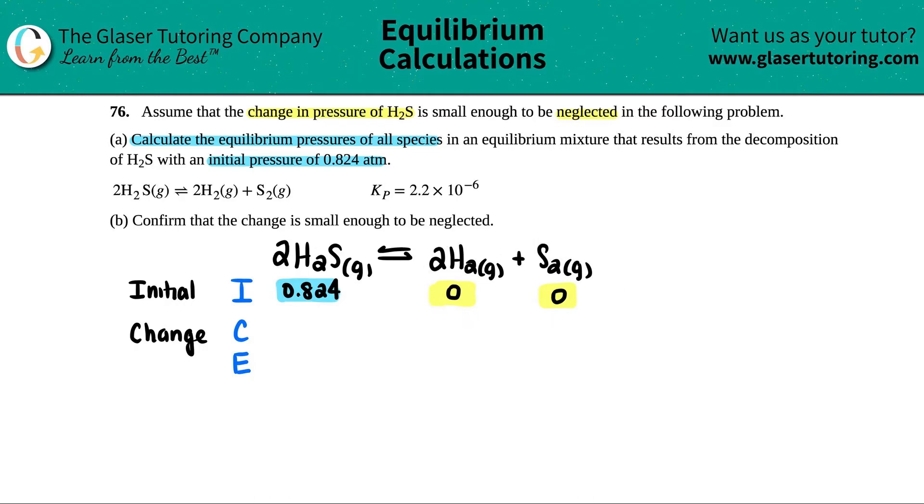Remember, if you have nothing, you can only go up from there. Can't have anything that's a negative pressure. Negative pressure doesn't exist. So since I started with 0, I would have to increase by some number on the product side. And if the product side are increasing, the reactant side is decreasing. So this would have to be a negative. But now, since we don't know what the value is, we have to label it as a variable. And generally, the variable of choice is X.